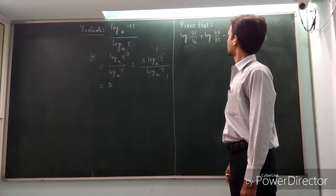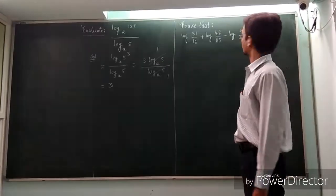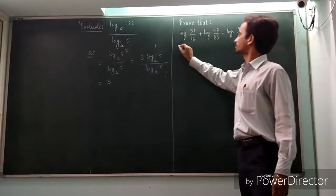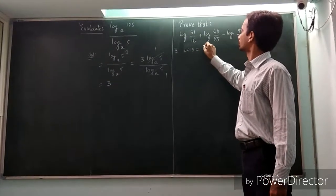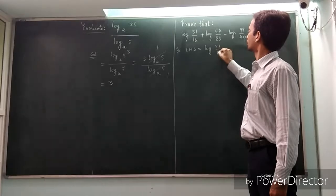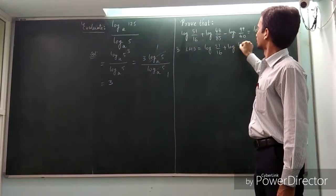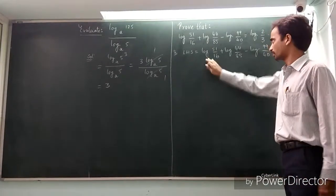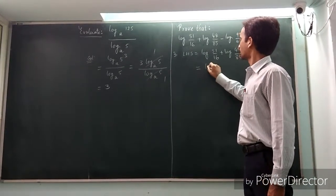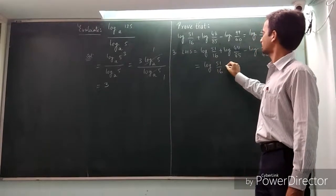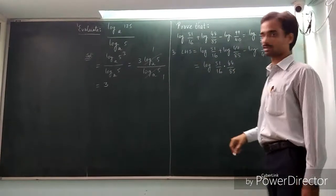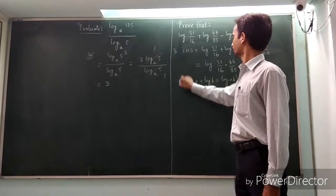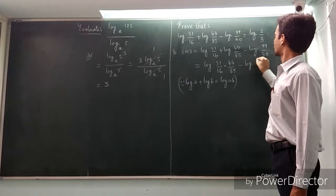Prove that log 51 by 16 plus log 44 by 85 minus log 99 by 40 is equal to log 2 by 3. Let us take the LHS. LHS is equal to log 51 by 16 plus log 44 by 85 minus log 99 by 40. The first two terms are in the form log a plus log b. Since log a plus log b equals log a into b, we can combine them as log of (51/16 × 44/85) minus log 99 by 40.